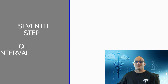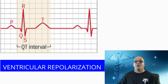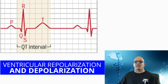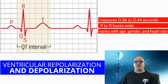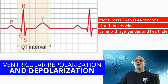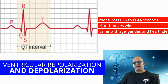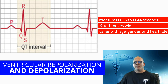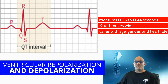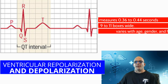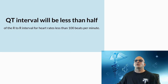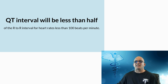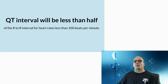The seventh assessment tool is for the QT interval. This interval indicates both repolarization and depolarization — or relaxation and contraction phases — of the ventricles. It is measured from the beginning of the QRS complex to the end of the T wave. Normally, the QT interval measures 0.36 to 0.44 seconds, which equates to about 9 to 11 boxes in width. It is important to note that this number can vary with age, gender, and heart rate. Another way to accurately assess the QT interval is to remember that it will be less than half of the R to R interval for heart rates less than 100 beats per minute.